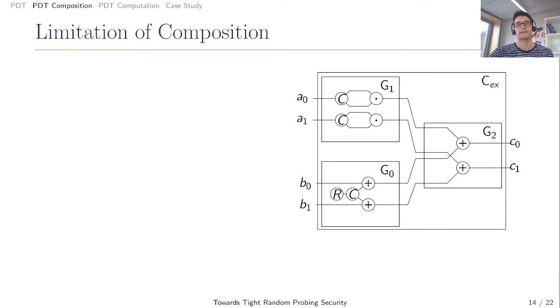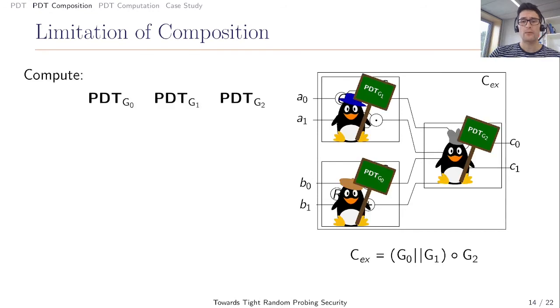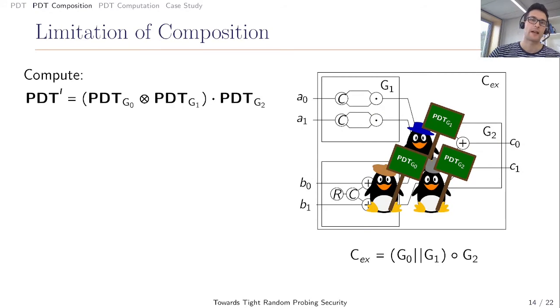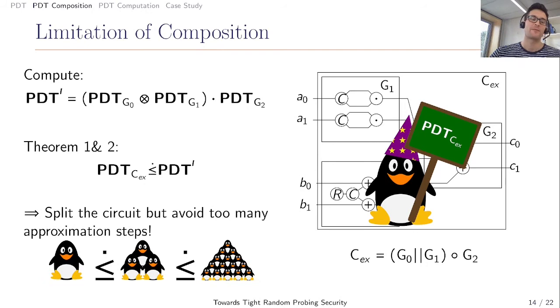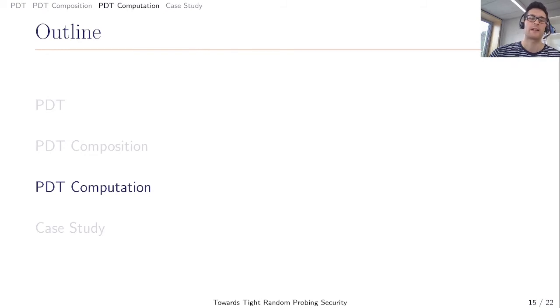Using these two composition results, we can analyze our circuit example again. Our CX can be described with the gadget G0, G1, and G2. And we can compute the PDTs of each GI. Now we can compose them together to compute the PDT prime. And with Theorem 1 and 2, we know that the PDT CX can be upper bounded with the PDT prime. We also should avoid too many approximation steps due to the approximation in Theorem 2. That's why Gaetan Casillas will now explain how to compute the PDTs for circuits efficiently.